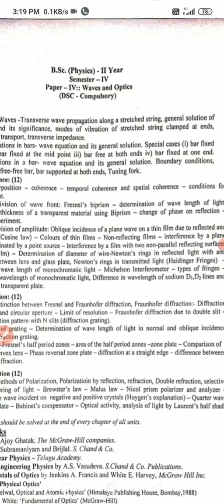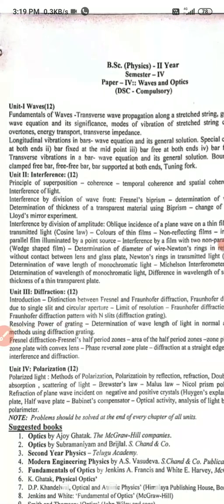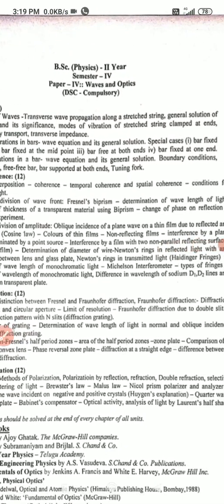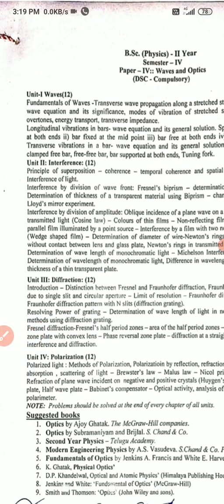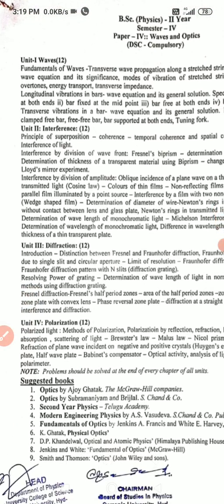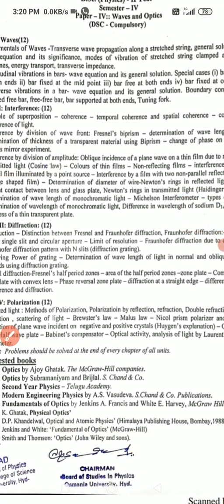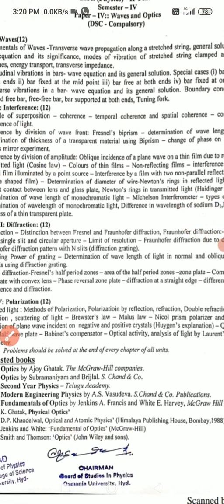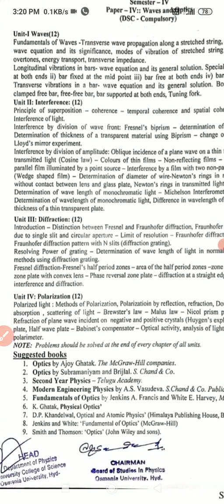For long answers in the first part: Lloyd's mirror and Fresnel biprism. For short answers: coherence, conditions for interference of light, and definition of interference. For the second part — interference by division of amplitude — the important questions are Michelson interferometer and determination of diameter of wire using Newton's rings, which are the important long answer questions from the second part.